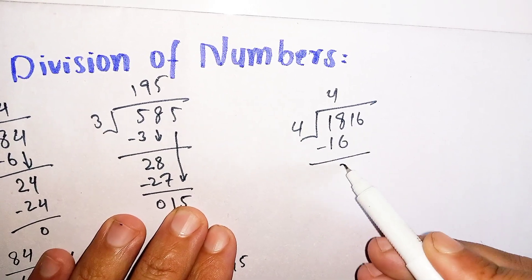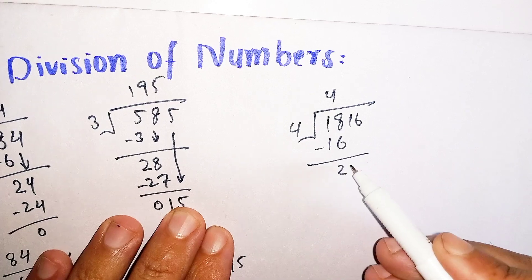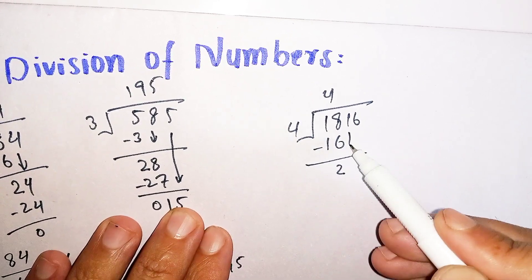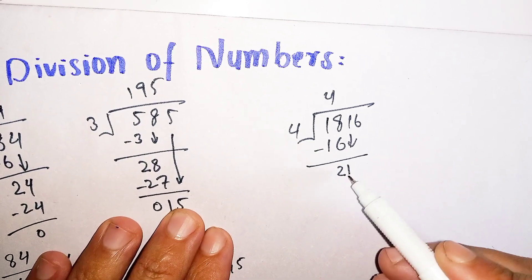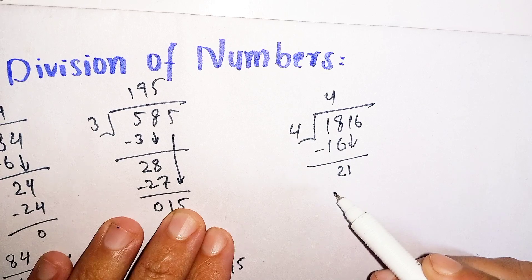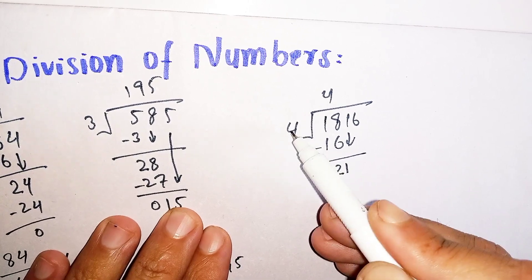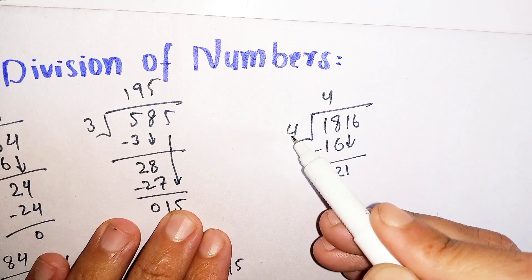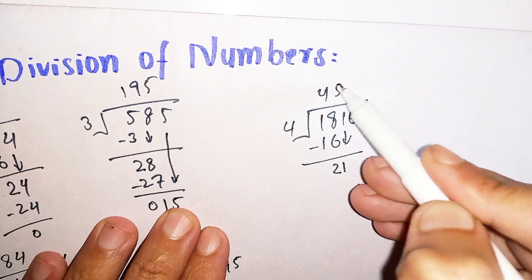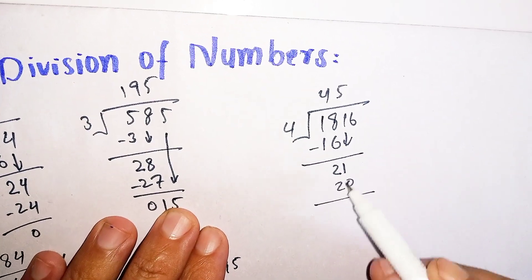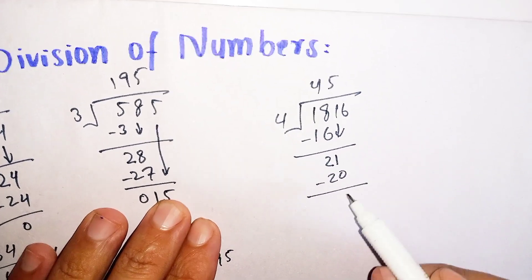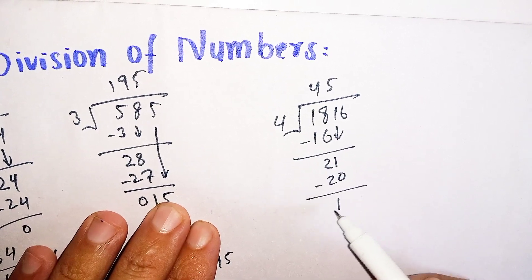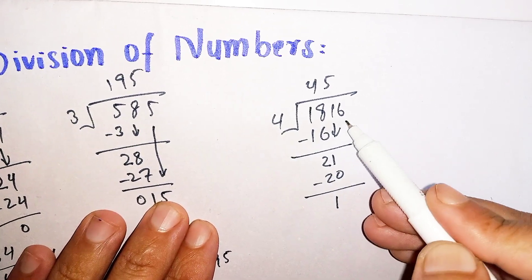Now we cannot divide 2 by 4, so we will bring down the 1 near 2, which becomes 21. How many times does 4 go into 21? 4 times 5 is 20. Subtract 20 from 21, the remainder is 1. Now again we cannot divide 1 by 4, so we will bring